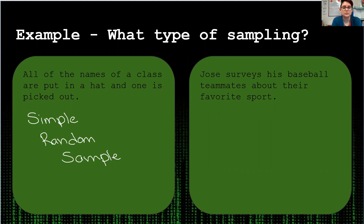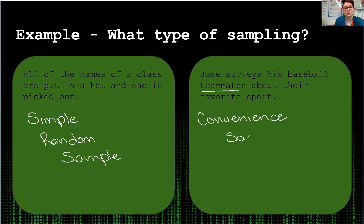Our next example: Jose surveys his baseball teammates about their favorite sport. This is a convenience sample. Jose just surveyed his teammates — people he's around all the time — about their favorite sport. He didn't try to get different results or different opinions; he just asked the baseball team. Chances are, if they're playing baseball, their favorite sport is baseball — not always, but it's a pretty good estimation.